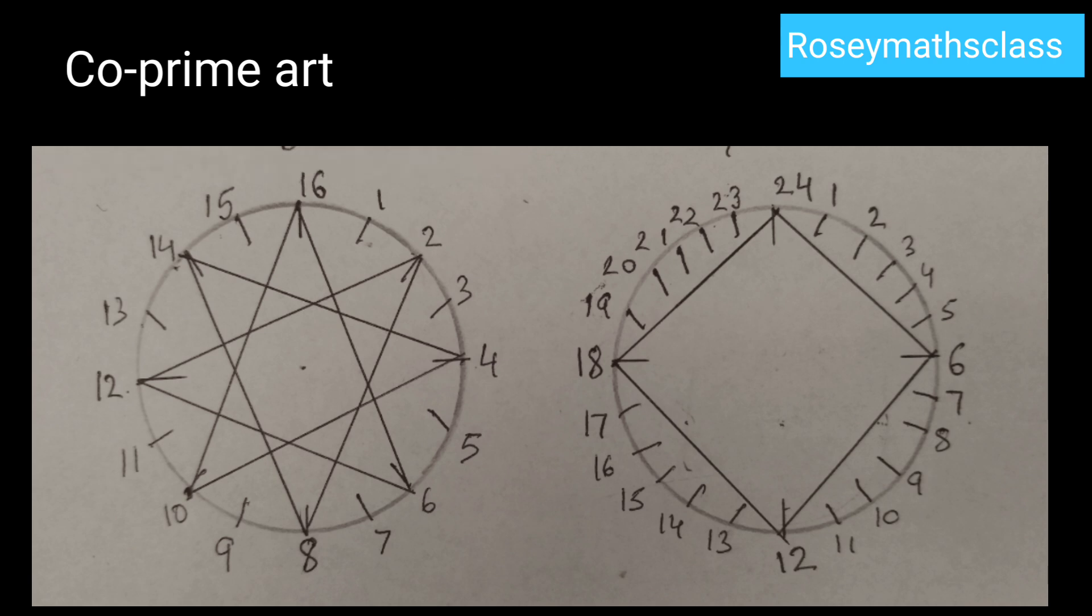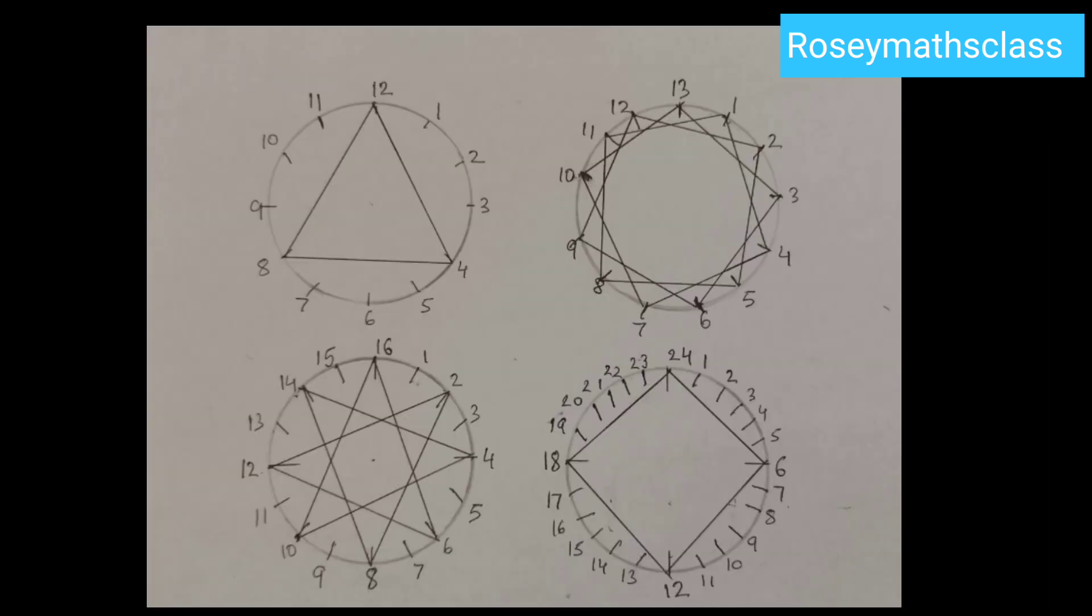Now in some diagrams the thread is tied to every peg, and in some it is not. So now we need to relate this thread art to co-prime numbers. If the thread is tied to every peg, then we can say the two numbers are co-prime. For example, 13 and 3 are co-prime numbers.